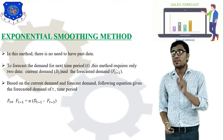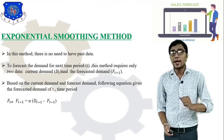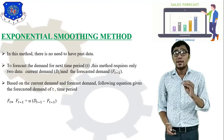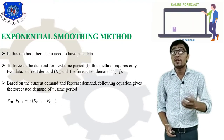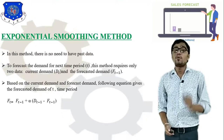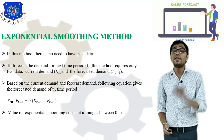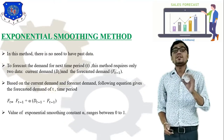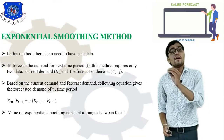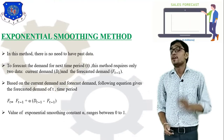I have denoted current demand as D(t) and forecasted demand as F(t-1). The equation is: F(t) = F(t-1) + α × [D(t-1) − F(t-1)], where F(t-1) is the forecasted demand, α is the exponential smoothing constant, and D(t-1) is the actual demand. The value of the smoothing constant α ranges between 0 and 1. Using this equation we calculate the forecasted demand.